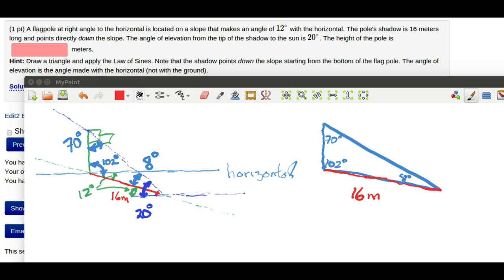This is a classic problem for solving by law of sines. So applying the law of sines, I called the height of the flagpole F. Then F divided by the sine of 8 degrees is equal to 16 divided by the sine of 70 degrees.